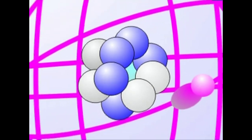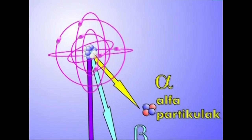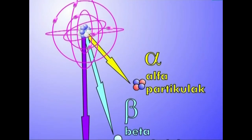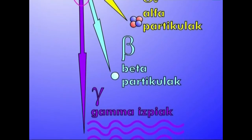Bistan denez, partikula haiek atomoetik bertatik irtenak ziren. Gauzak horrela, atomoa zati ezinezkotzat jadanik ezin zen defendatu. Atomo guztiak, beraz, partikula jakin batzuez osatuak zirela pentsatzen hasi ziren zientzialariak. Eta partikula horietako batzuk galduz gero, ezin da hortik aurrera atomo bera izan; beste elementu bat izango da. Horri transmutazio deitu zitzaion. Beraz, erradioaktibitatea atomoaren barruan gertatzen diren aldaketen ondorioetako bat da.